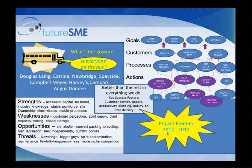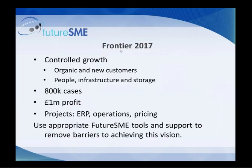What it all led to was Project Frontier — we developed the strategy through to 2017. Within Project Frontier, we want to continue going for growth, picking up both organic and new customers. We need to develop people, infrastructure, and storage. We want to build up to approximately 800,000 cases of production and a million pounds profit. We will use FutureSME tools to support this. We are at the end of 2012 and well on the way to achieving these targets early, prior to 2017. So we are quite comfortable with the progress the business is making, with big investment projects underway on infrastructure which will set us up very well for 2013 and beyond.